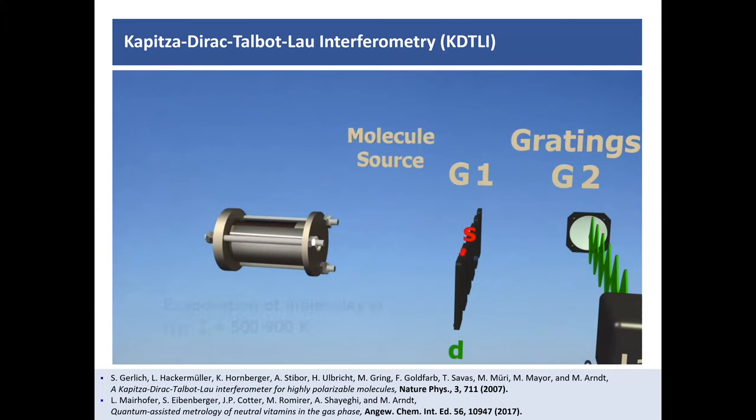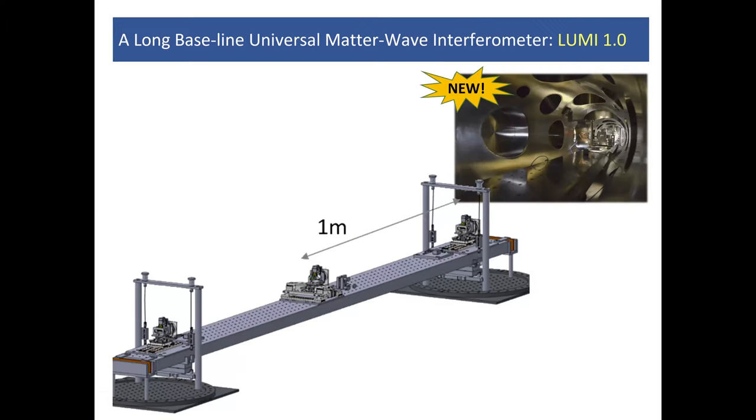Now, we've done this for a number of different molecules. And I will just skip a few years ahead in time to the last three years, more or less, where we started setting up a new experiment, which built on that idea that I showed to you before. And just stretched it by a factor of 10 compared to what we had before. We call this the long baseline universal matter wave interferometer. Long baseline because the machine is five meters long. The interferometer itself is only two meters. But it's long for these purposes, and it's universal because it can manipulate a large variety of different particles, as you will see.